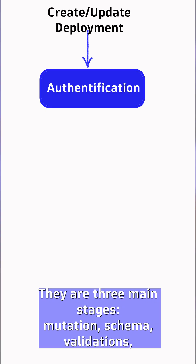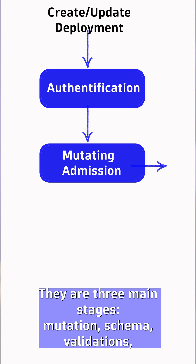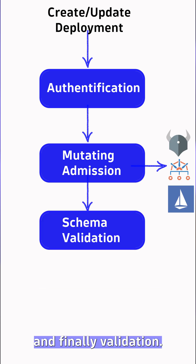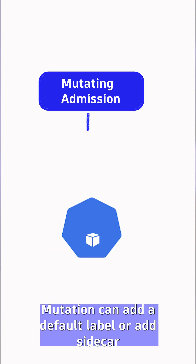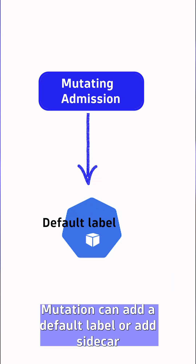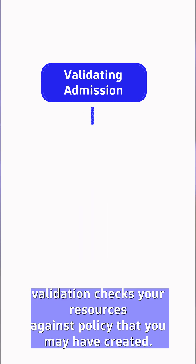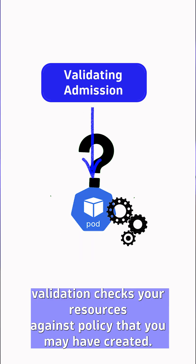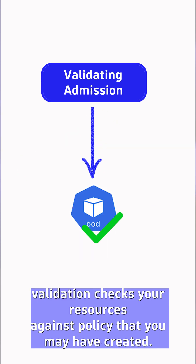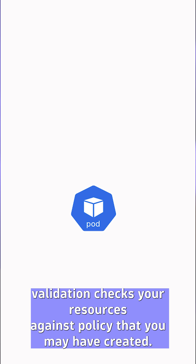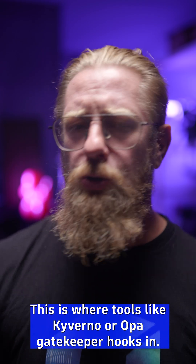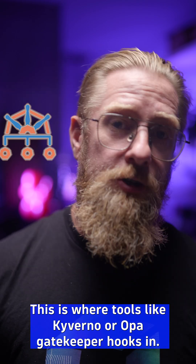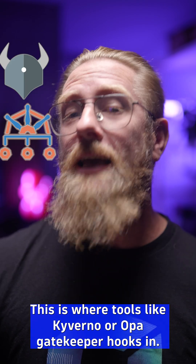There are three main stages: mutation, schema validation, and finally validation. Mutation can add default labels or inject sidecars. Validation checks your resources against policies that you may have created. This is where tools like Kyverno or OPA Gatekeeper hook in.